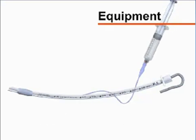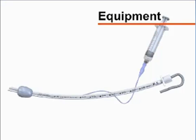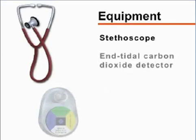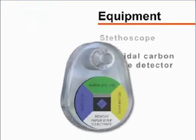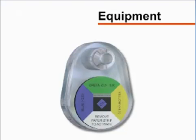The tubes have a balloon on the distal end that, when inflated, creates a seal between the tube and the tracheal lumen and prevents air leaks and aspiration of gastric contents. You will also need a stethoscope and an end-tidal carbon dioxide detector to assess for proper placement of the endotracheal tube. Commonly used detectors change color in the presence of carbon dioxide.